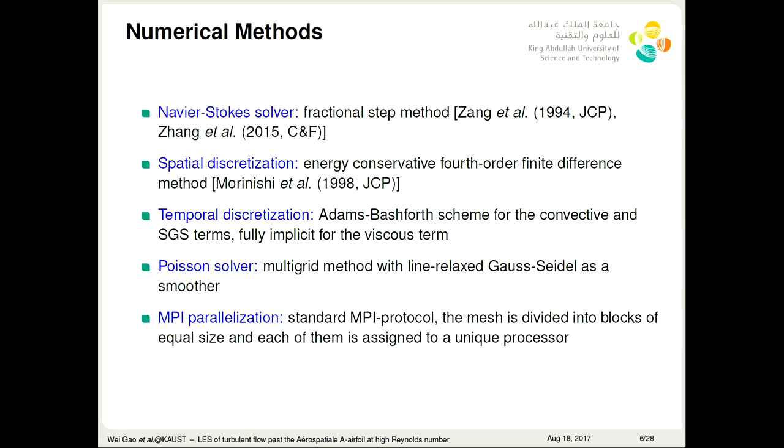To solve these equations, I use the fractional step method. For the spatial discretization, I use the energy-conservative fourth-order finite difference scheme. For the temporal discretization, I use the Adams-Bashforth fourth scheme for the convective and SGS term, and a fully implicit for the viscous term. For the pressure Poisson equation, I solve this with the multigrid method with line-relaxed Gauss-Seidel as a smoother. Finally, all the code is parallelized with MPI. The mesh is divided into blocks of equal size, and each of them is assigned to a unique processor.